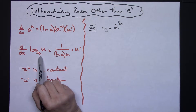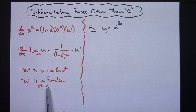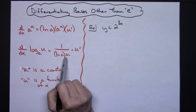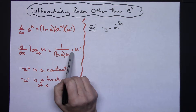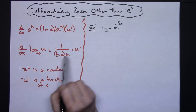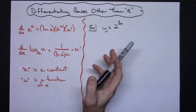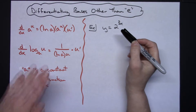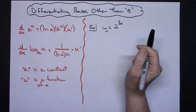The second formula: the derivative of log base a of u, where a is a constant and u is some function of x. When I take the derivative I apply the formula: one over natural log of a times u, times u prime. That u prime can then be moved to the numerator when you simplify. We'll be doing about four examples implementing these two formulas.